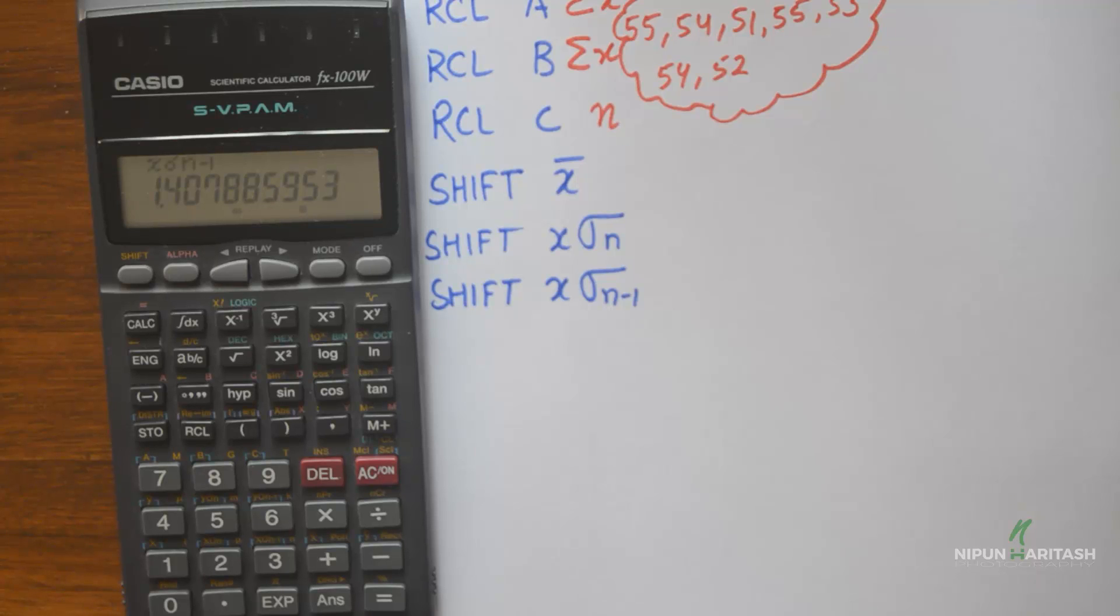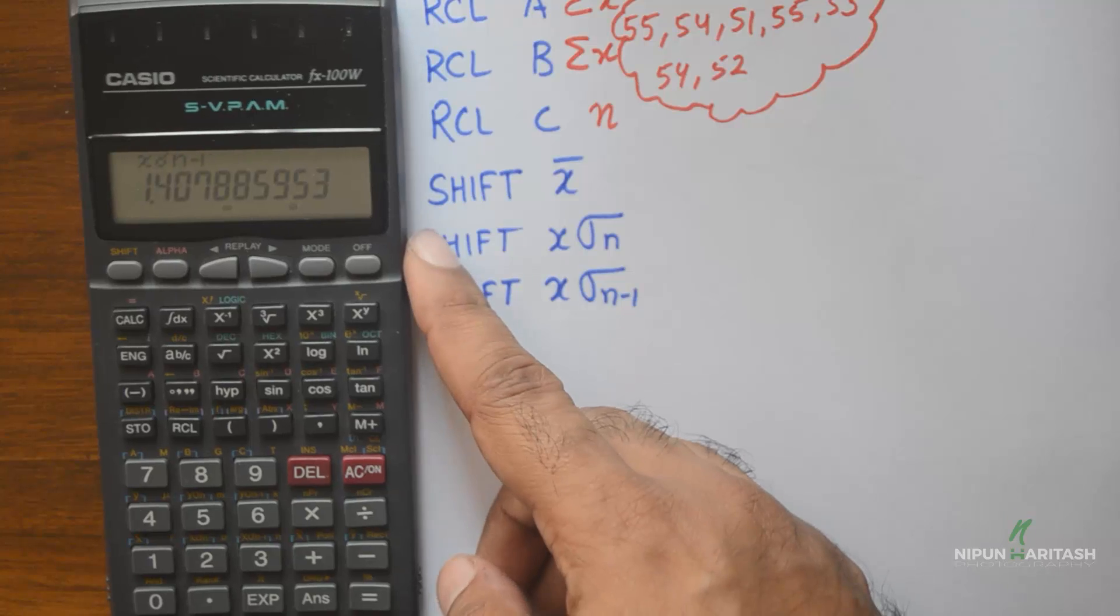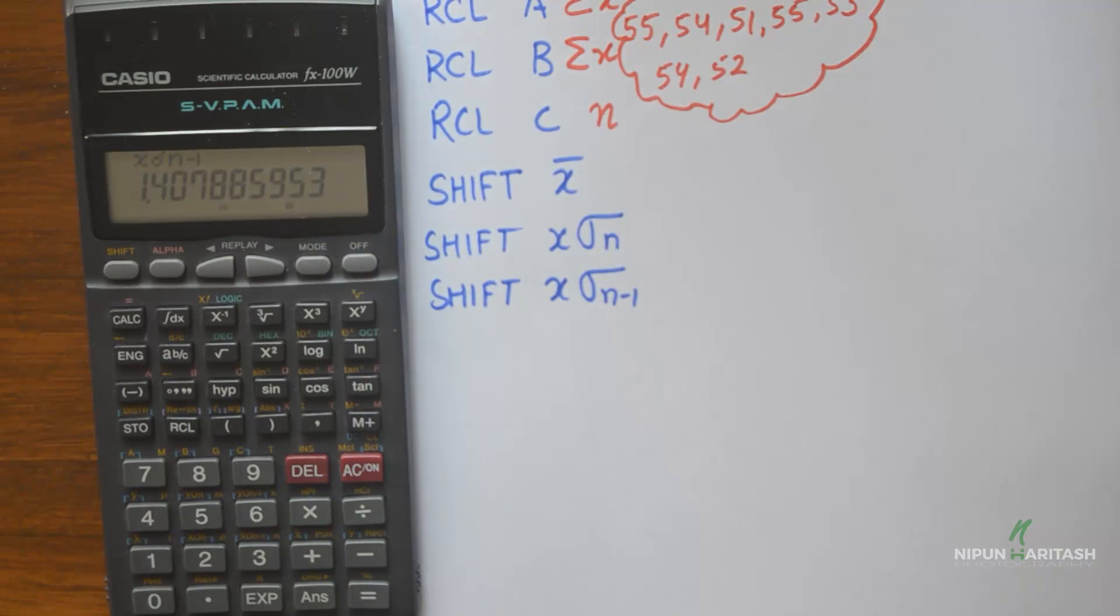That is how you can find various things in standard deviation by using recall ABC and shift 1, 2, 3. All the functions are written here for your reference purpose. You can go back to the video and see if you have any doubts.